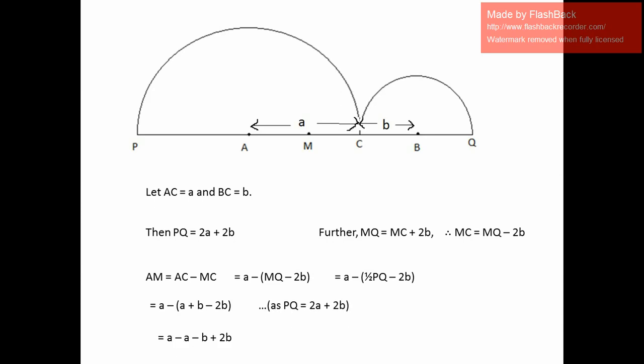Which gives us after a bit of algebra as b. AM = b. And b is nothing but the radius of the smaller semicircle BC.